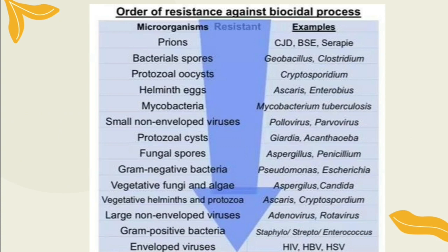The order of resistance against biocidal processes: contamination with microbes is a concern in industrial, home, and healthcare environments. The resistance of microbes to control methods varies greatly depending on the type of microbe and its life stage. The resistance ranges from least to highest resistant organisms. The highly resistant microorganisms are prions — examples include Creutzfeldt-Jakob disease (CJD), BSE, and Scrapie. The least resistant organisms are enveloped viruses such as HIV, Hepatitis B virus, and Herpes simplex virus.